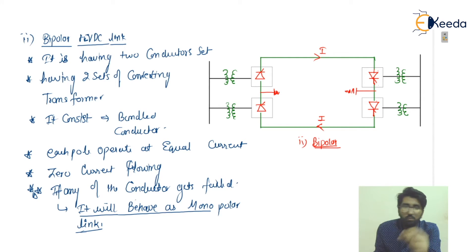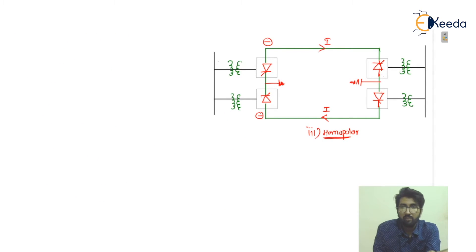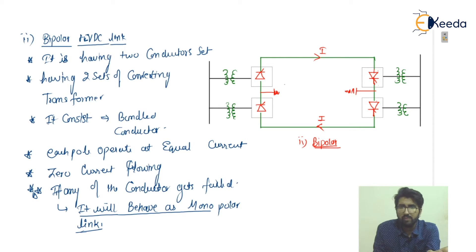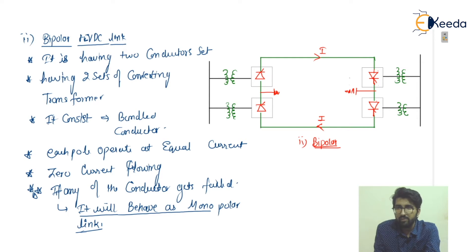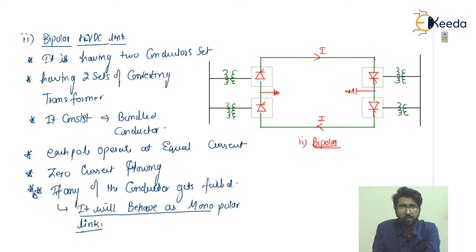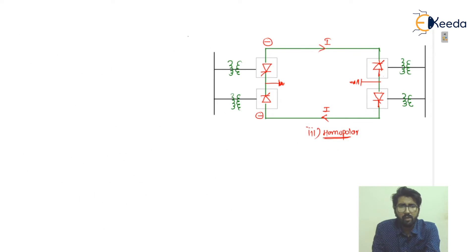One important point to add: the bipolar link is grounded at the midpoint. If the total voltage is V from one end to the other, then each conductor carries V/2. So the voltage value is halved — each pole has a voltage of V/2.